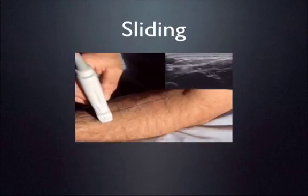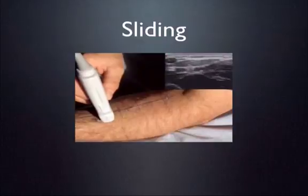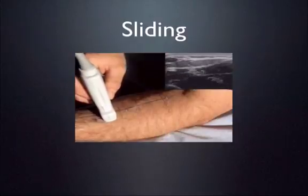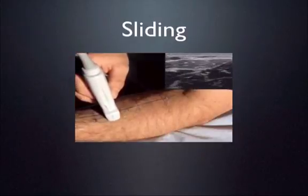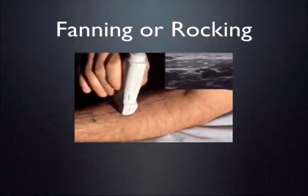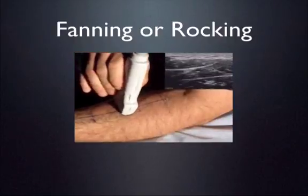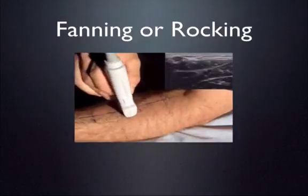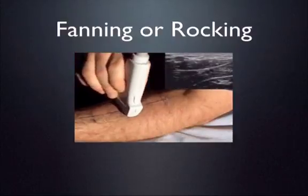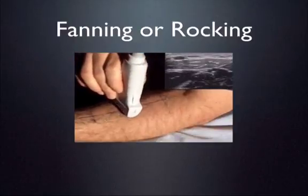Sliding the probe means moving the face of the probe along the skin surface with slow, purposeful motion. Notice in this example the individual holds the probe at the base, not the top, producing a nice high resolution image. Fanning — also called rocking — keeps the probe in one position on the skin while shining the ultrasound beam through the soft tissues by rocking the probe side to side.